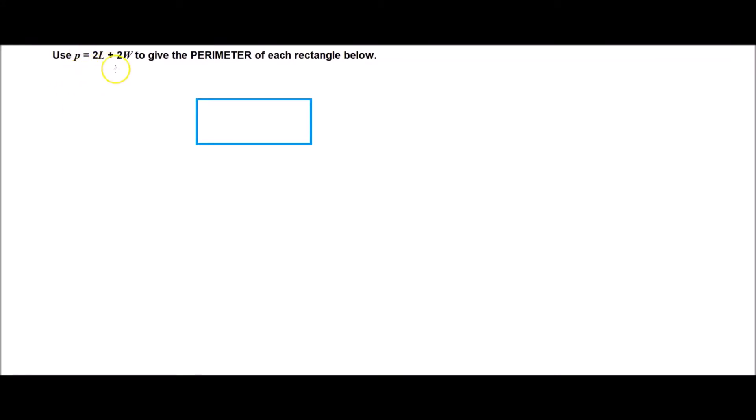Use P equals 2L plus 2W to give the perimeter of each rectangle. So in this particular case, you'd be given a question like this. You'll have a rectangle and you'll be given the length of each side. So for example, this one here might be 5 centimeters and the width might be, let's say, 2 centimeters.